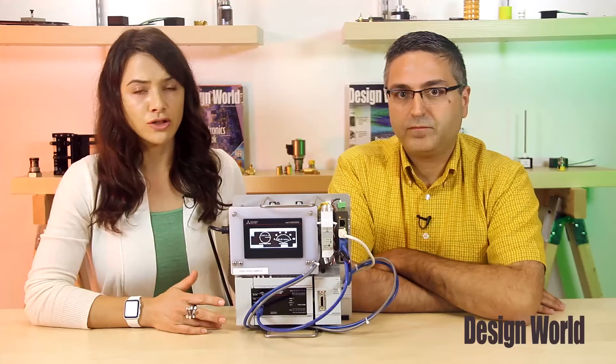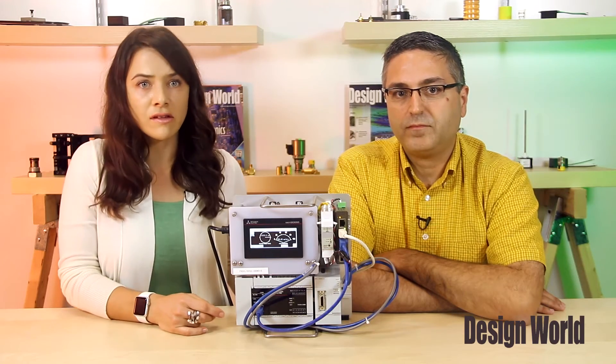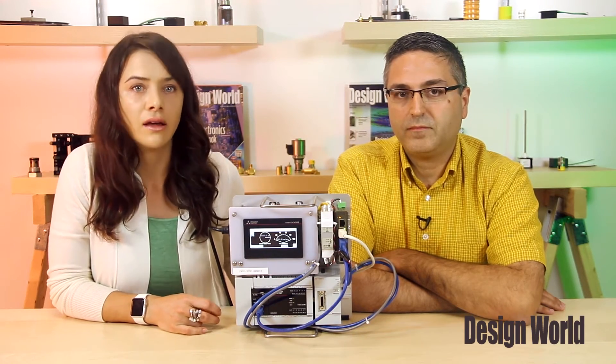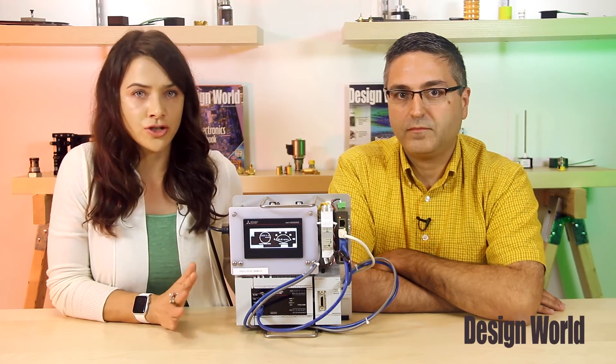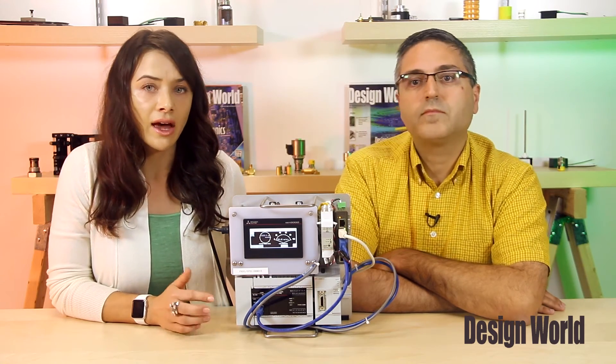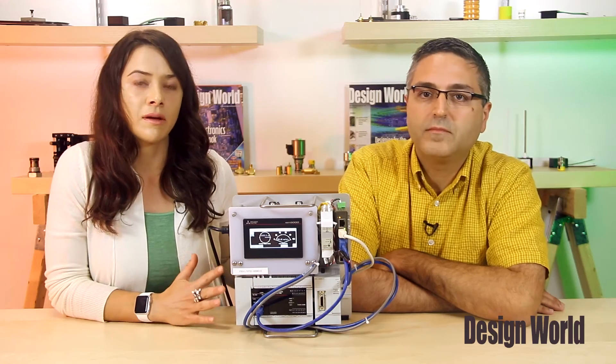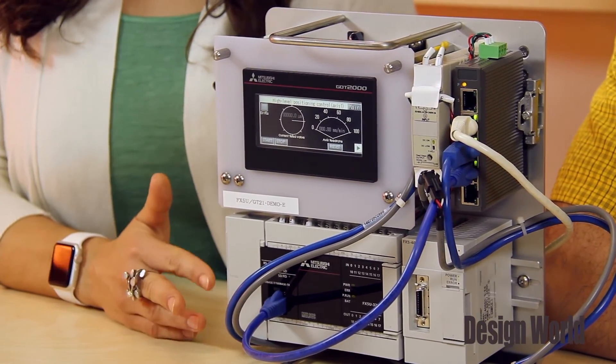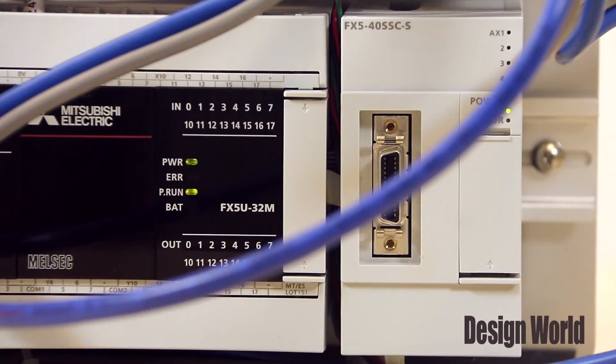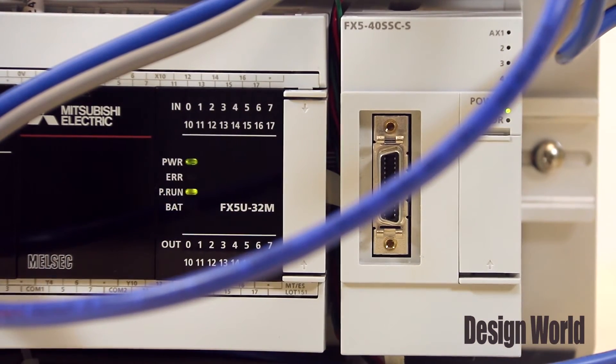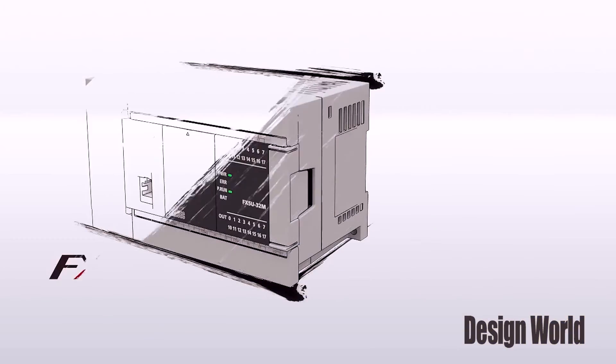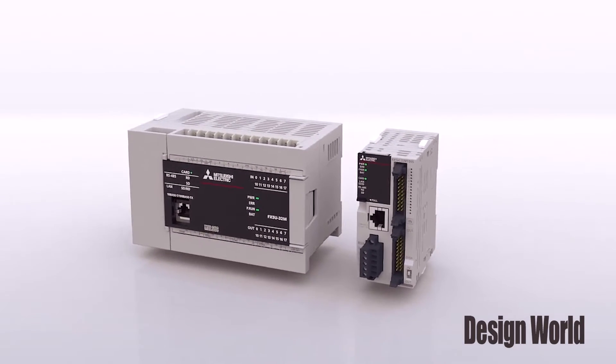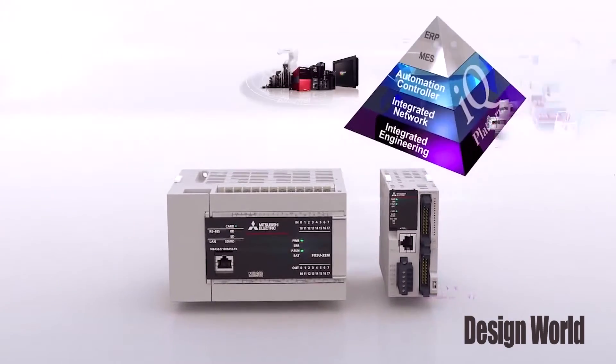Adding functions with expansion modules is easy. With this setup, we have a simple motion module, FX540SSCS. Getting back to the FX modules, just for one final comment, the FX5 Deanna sent with this demonstration gives us motion functionality for synchronous control, cam control, and speed torque control for up to four axes over the network, to let users get control in an intuitive format. Check out the video from Mitsubishi Electric about physical features of the FX5 modules.